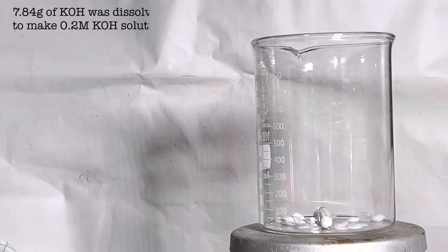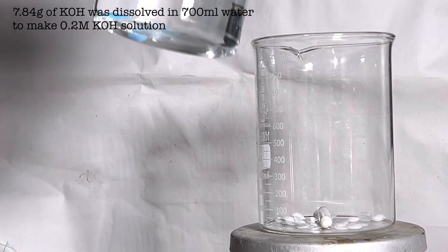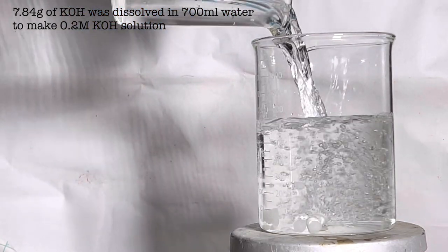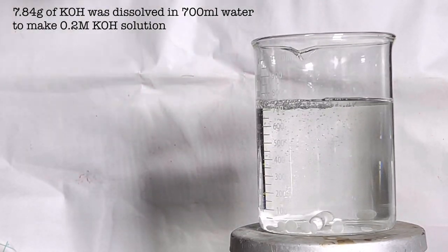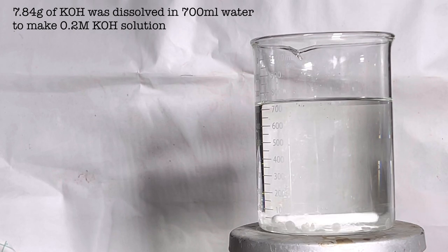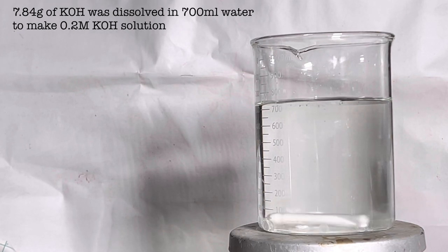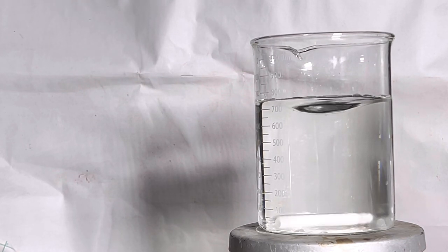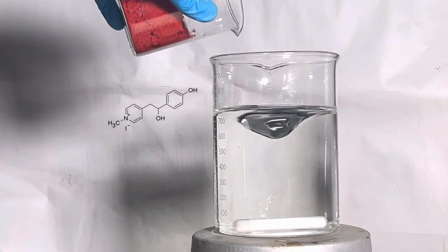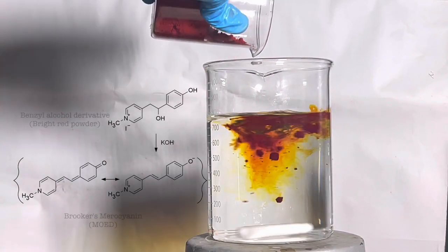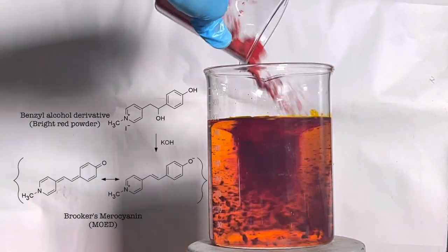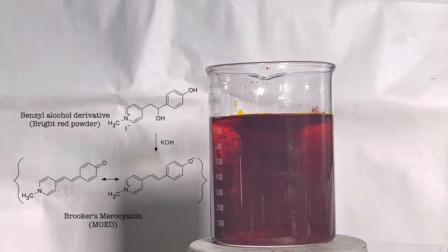Next we take a 1000 milliliter beaker. We will be making a 700 milliliter 0.2 molar potassium hydroxide solution. I have taken 7.84 grams of potassium hydroxide pellet and I added 700 milliliters of water which would give a 0.2 molar solution. Now add the previously made bright red powder to the potassium hydroxide solution. The compound very easily dissolves in it giving a deep red to almost black colored solution.